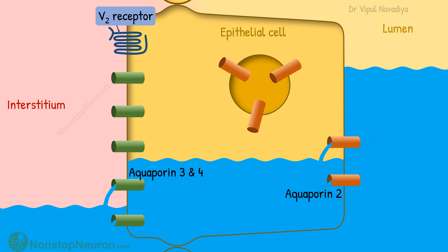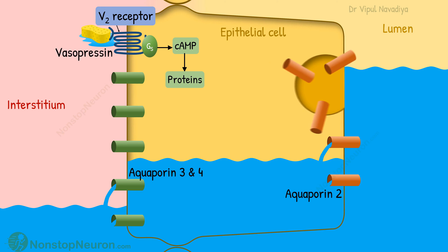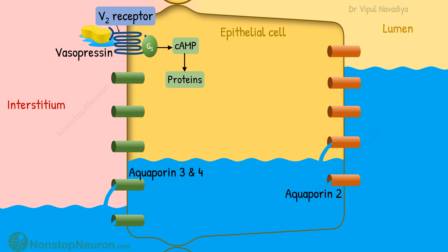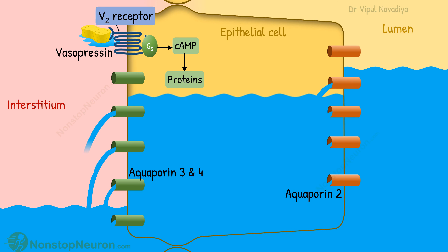So this is how vasopressin increases water reabsorption. In summary, vasopressin increases the expression of aquaporin-2 on the apical membrane, which in turn increases water reabsorption.